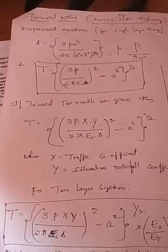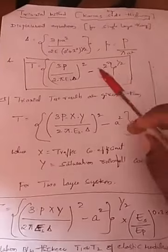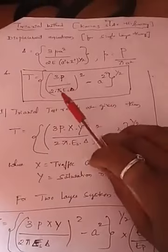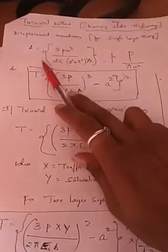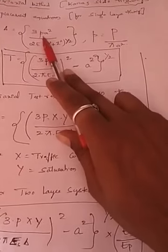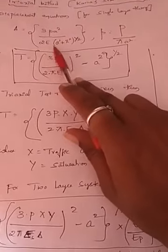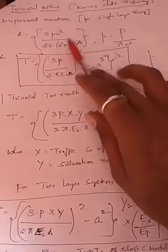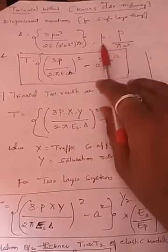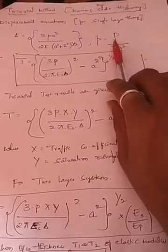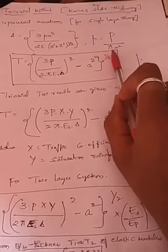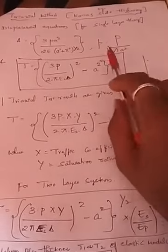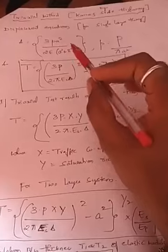Directly I will start with the procedure and equations. The deflection equation for single layer theory is given by: Delta equals 3Pa² divided by 2 times E times (a² + z²) raised to 1/2. Here, small p is tire pressure given by P divided by pi·a², where capital P is wheel load and a is the radius of the contact area.